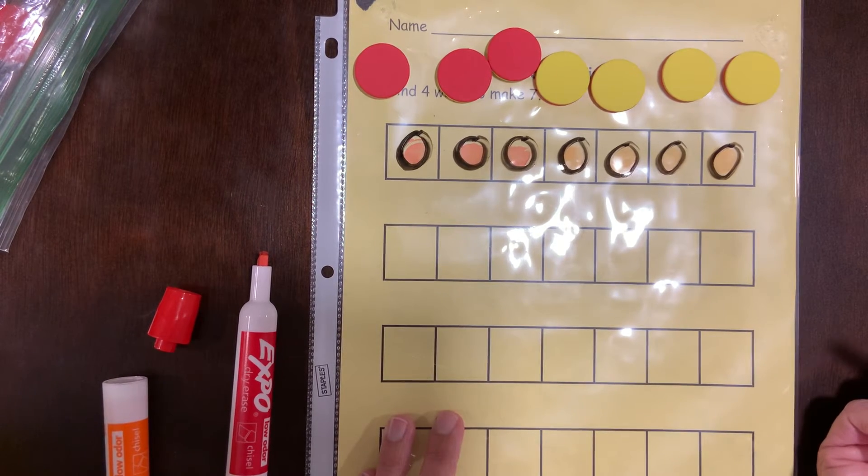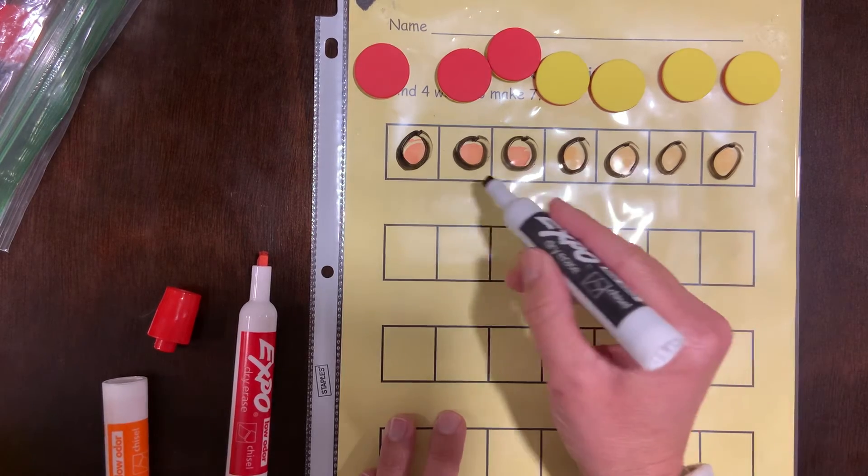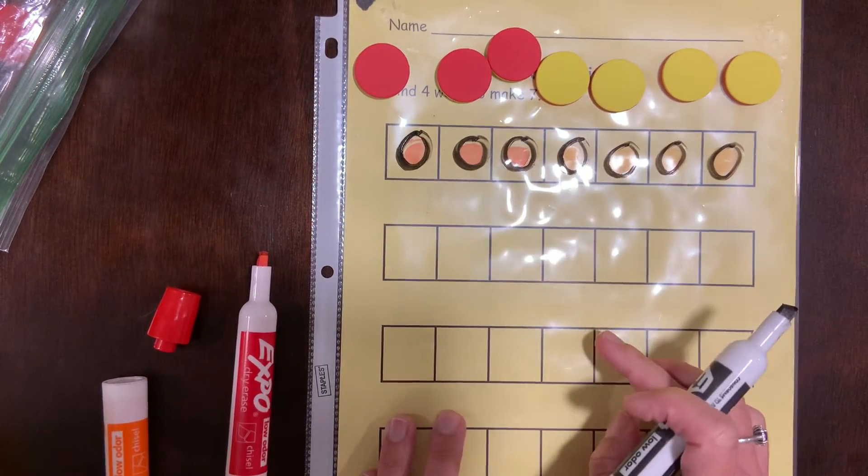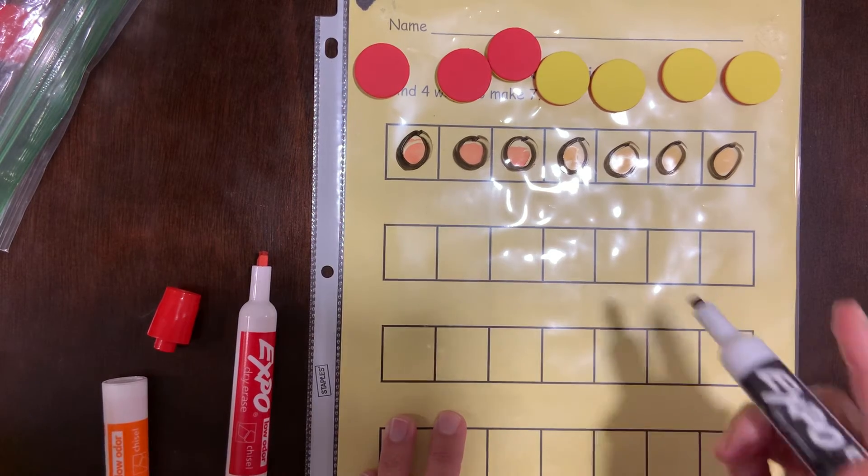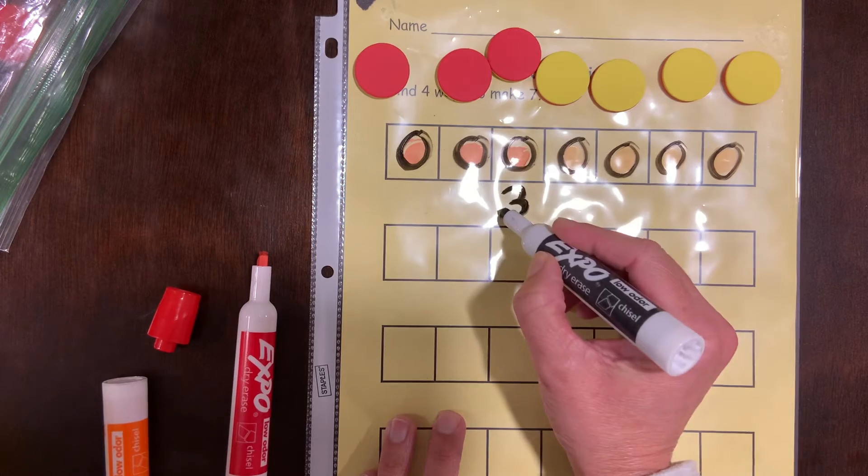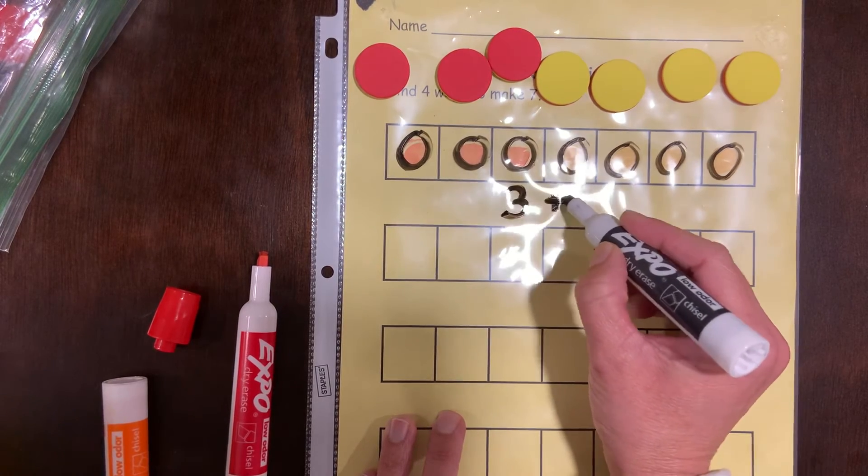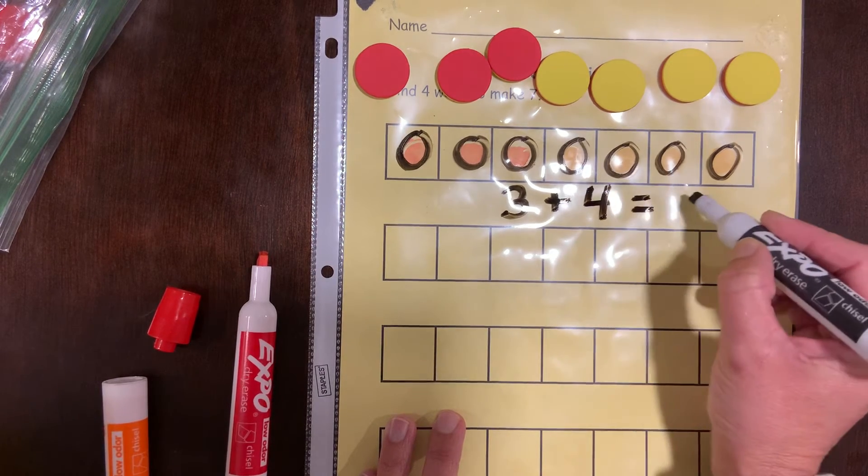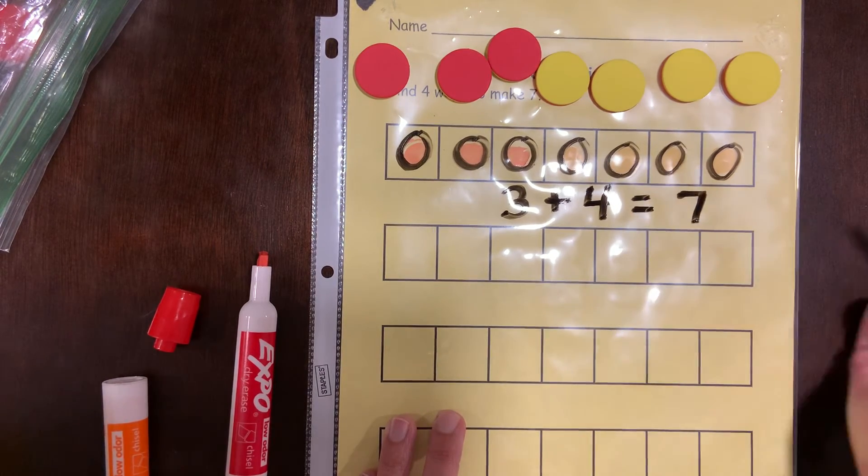If you're ready to take that challenge of writing your math equation, you can do that right down here in the space underneath your way to make seven. So that would look like we have three reds plus four yellows equals seven in all.